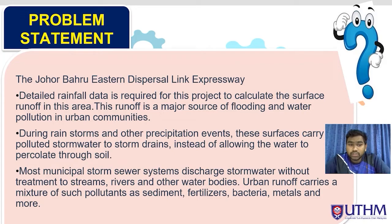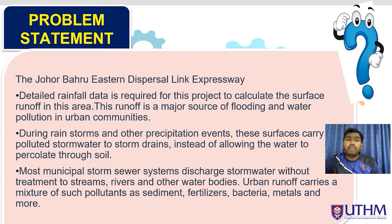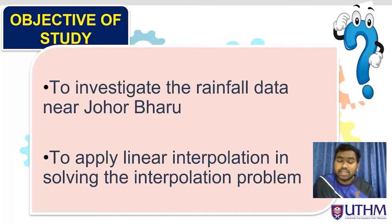Instead of allowing water to percolate the soil, many are dispersed to the housing area as well. Most urban stormwater systems discharge the stormwater without treatment into streams, rivers, and other water bodies. Urban water runoff carries a mixture of pollutants such as sediment, fertilizers, bacteria, metals, and many more substances. Our main objective is to investigate the rainfall data near the Johor Bahru area by applying the linear interpolation method.